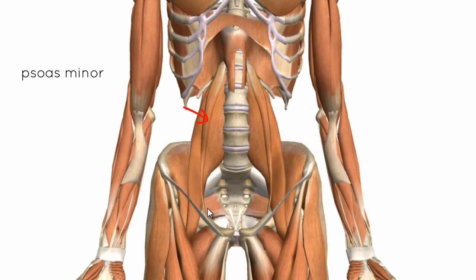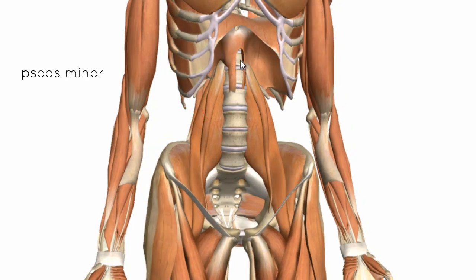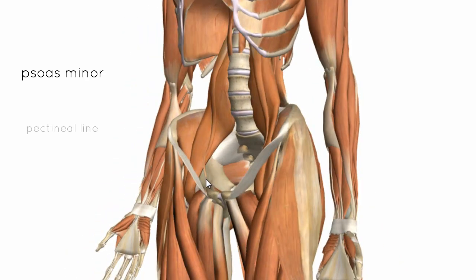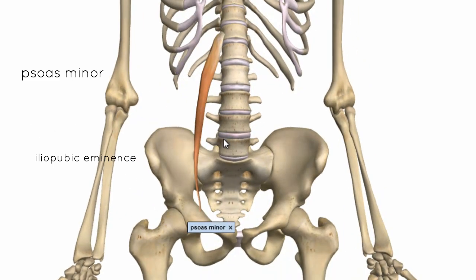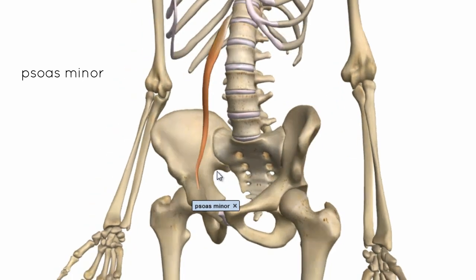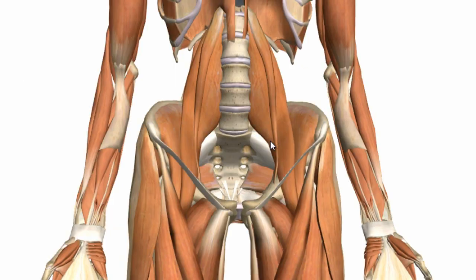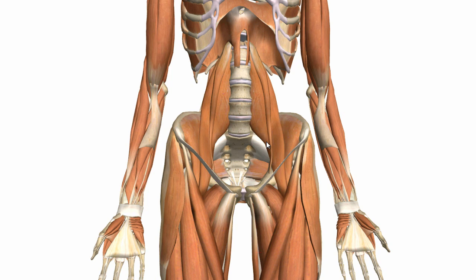The psoas minor sits on top of the psoas major. This muscle isn't always present in everybody, but if it is present, it originates on the bodies of T12 and L1, and it inserts on the pectineal line and the iliopubic eminence. The psoas major is innervated by the anterior rami of spinal nerves L1 to L3, and the psoas minor is innervated by the anterior ramus of L1. The psoas minor acts as a weak flexor of the vertebral column.